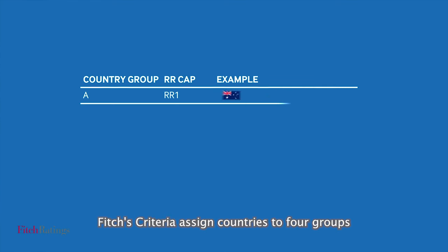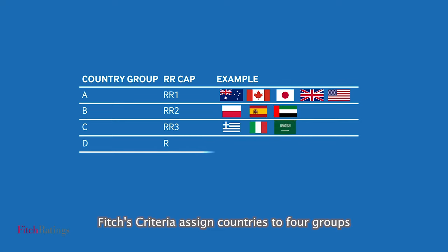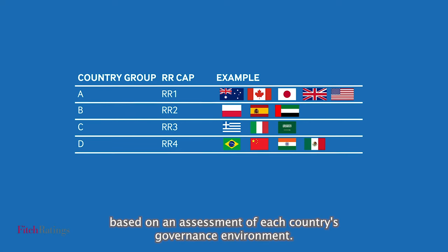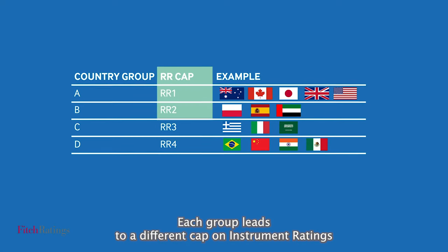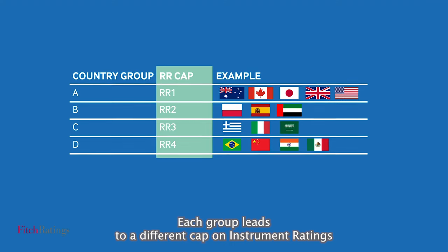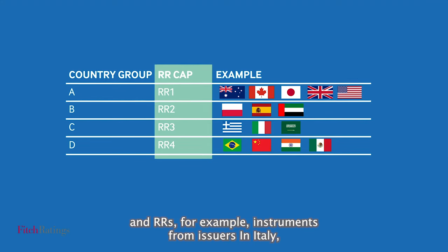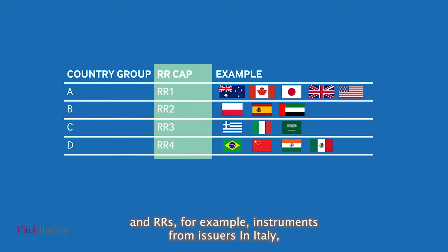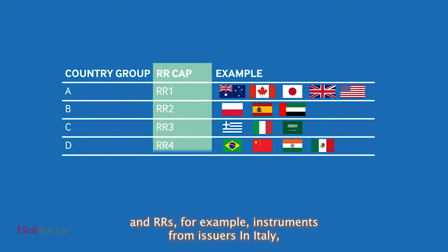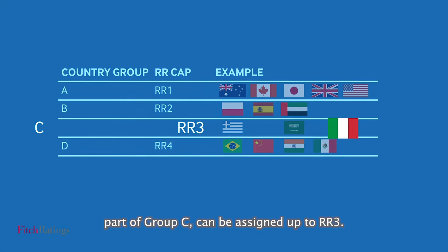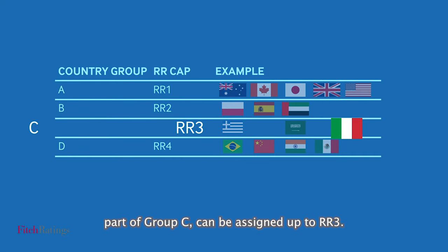Fitch's criteria assign countries to four groups based on an assessment of each country's governance environment. Each group leads to a different cap on instrument ratings and RRs. For example, instruments from issuers in Italy, part of Group C, can be assigned up to RR3.